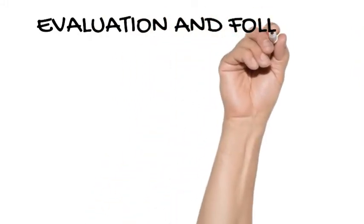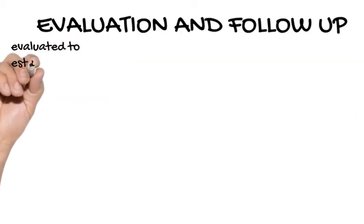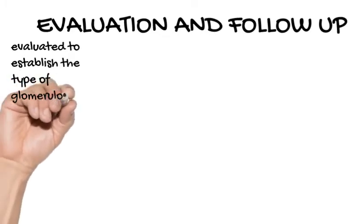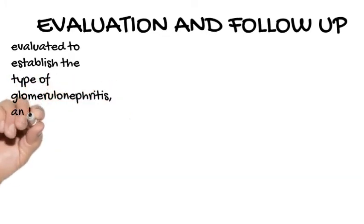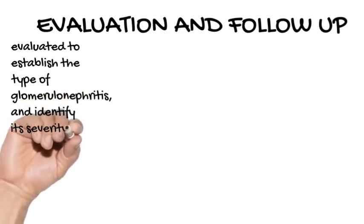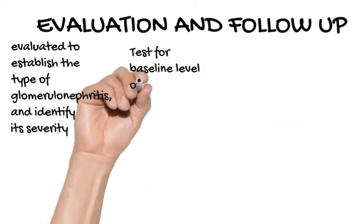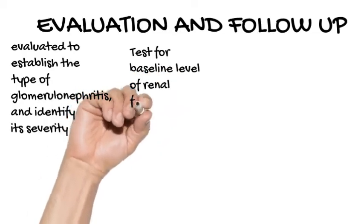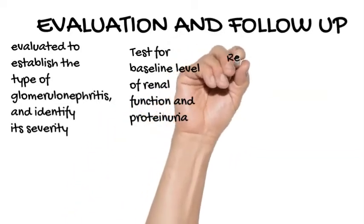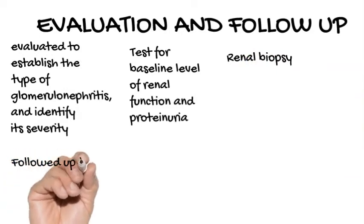Evaluation and follow-up. Patients with glomerulonephritis should be evaluated to establish the type of glomerulonephritis and identify its severity. Testing for baseline level of renal function and degree of proteinuria should be done. Renal biopsy and other investigations should be performed if indicated. Patients should then be followed up to assess progression of glomerulonephritis. Renal function, proteinuria, and other markers should continue to be monitored on follow-up, as indicated by the type and severity of the condition. The severity of kidney disease should be identified based on these markers as the disease progresses over time.